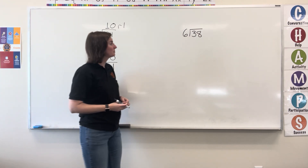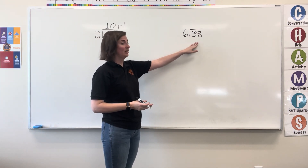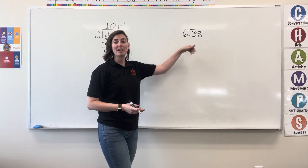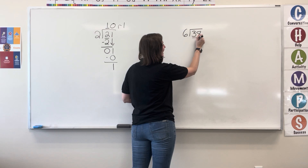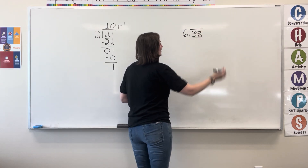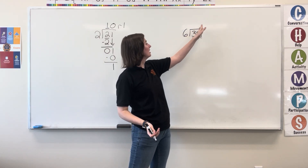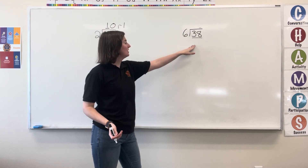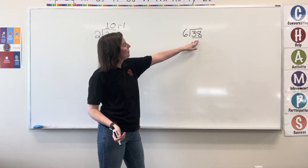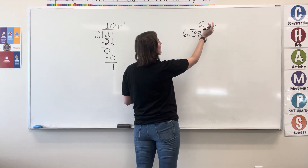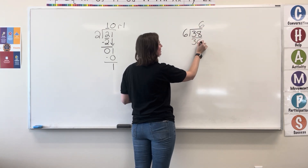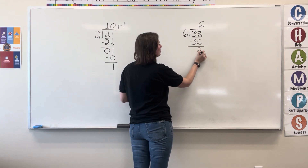Let's look at one more example. Here we have 6 going into 38. So, I'm going to check to see if 6 fits into 3. No. 6 into 38? Yes. So, my quotient is going to start here. 6 fits into 38 six times. 6 times 6 equals 36. Subtract, and I get 2.